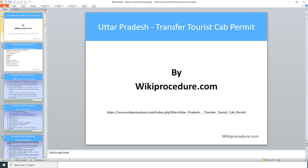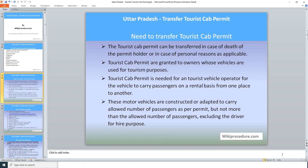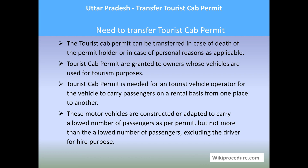The list of items covered in this session today: need to transfer tourist cab permit, documents required, how to apply, eligibility, validity, fees, processing time, offices and contacts, online resources, and other information. This procedure is sponsored by wikiprocedure.com.